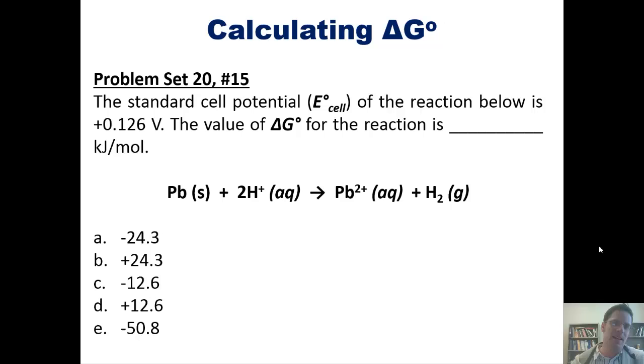Let's take a look at a problem then. The standard cell potential of the reaction shown here is plus 0.126 volts. The value of delta G for this reaction is how many kJs per mole? I'm not going to do this for you here, but if you wish, I'll post a link to a separate video here in which I show you how to do it on the board.